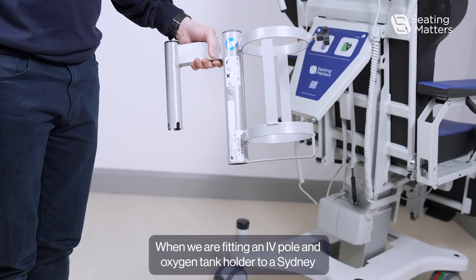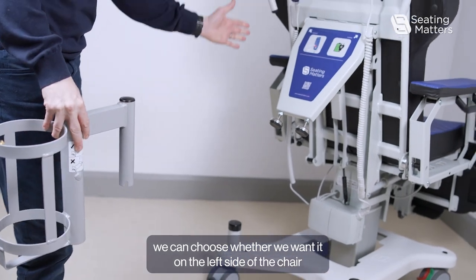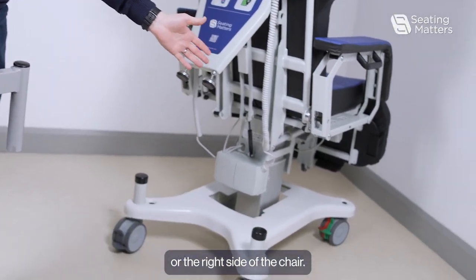When we are fitting an IV and oxygen tank holder to a Sydney, we can choose whether we want it on the left side of the chair or on the right side of the chair.